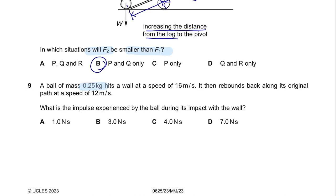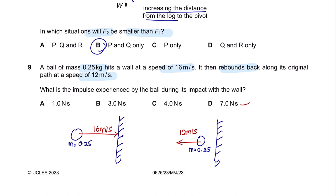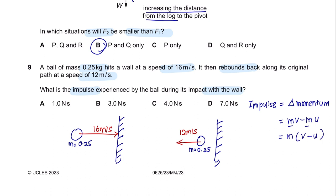Question 9. A ball of mass 0.25 kg hits a wall at a speed of 16 m/s, then rebounds back along its original path at a speed of 12 m/s. What is the impulse experienced by the ball? Impulse equals change in momentum: mass × (final velocity − initial velocity). Since mass is the same, we can factorize it outside. Now let's substitute in the values. The mass is 0.25 and the final velocity is 12 m/s. However, pay attention.